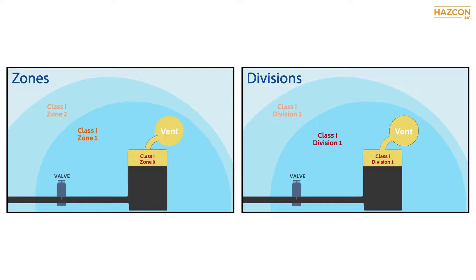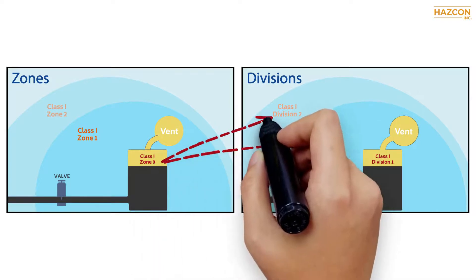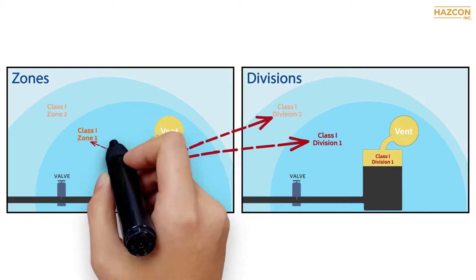Now it is time for zone certified products. Products that are suitable to be used in zone 0 may be installed in class 1 Division 1 and Division 2 and may also be installed in zone 1 and zone 2.